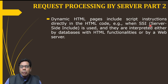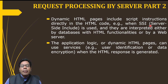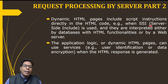The second type is dynamic HTML pages, which include script instructions directly in the HTML code. For example, when SSI — server-side include — is used, they can be interpreted either by databases with HTML functionalities or by a web server. Additionally, the application logic or dynamic HTML pages can use services such as user identification or data encryption, which are used when the HTML response is generated. In this way, request processing by the server is carried out.